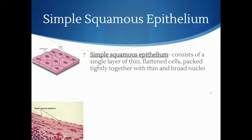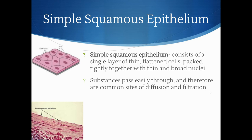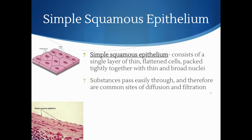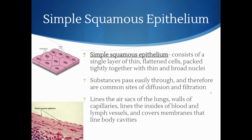The first type is simple squamous epithelium, which consists of a single layer of thin, flattened cells packed tightly together with thin and broad nuclei. Substances pass easily through them, making them a common site of diffusion and filtration. We find them in the air sacs of the lungs and walls of the capillaries — places where we want diffusion of gases, waste, and nutrients. They line the insides of blood and lymph vessels and cover membranes that line body cavities. 'Simple' means one layer; 'squamous' means thin, flat cell.